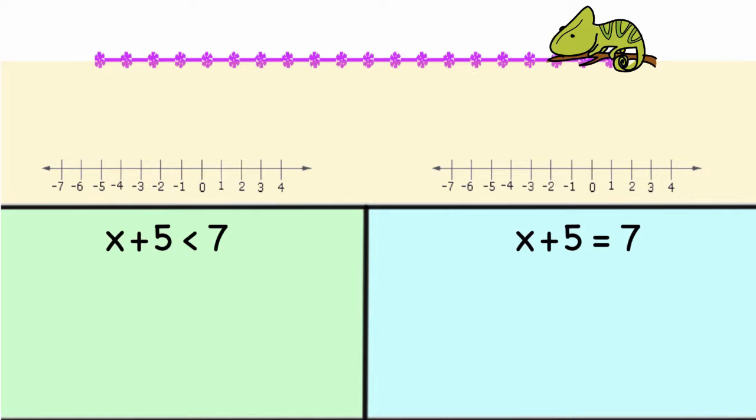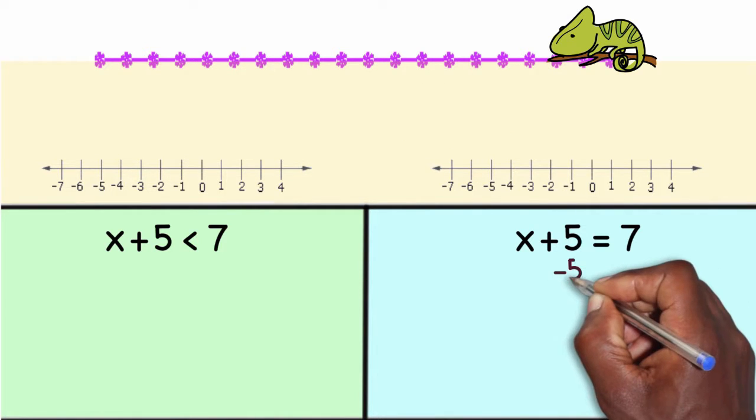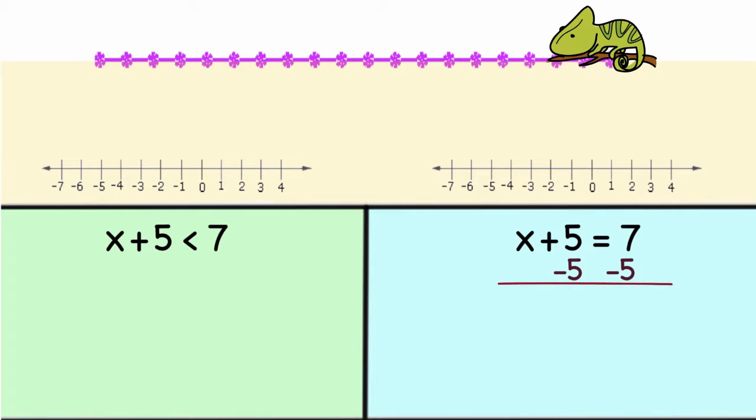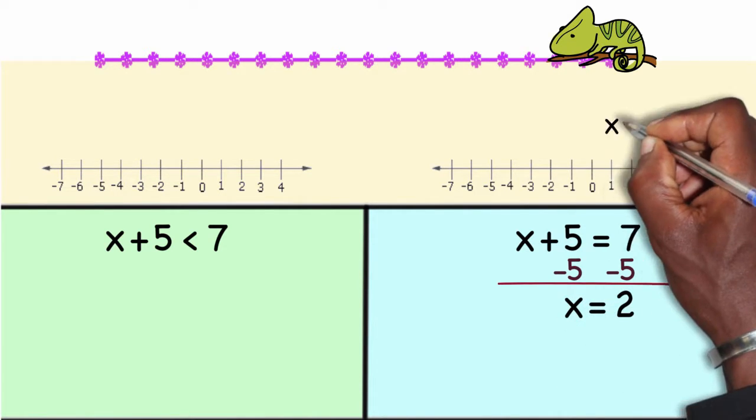When solving x plus 5 equal to 7, I know there is only one answer to this problem and the answer is 2. The way that we can demonstrate using algebraic properties to get x by itself is we are allowed to add a negative 5 to both sides. 5 plus a negative 5 is 0 and 7 plus negative 5 together make 2. And so I have x equals 2.